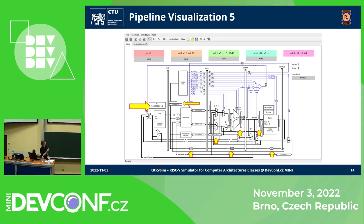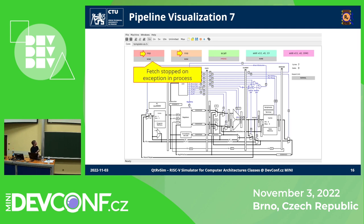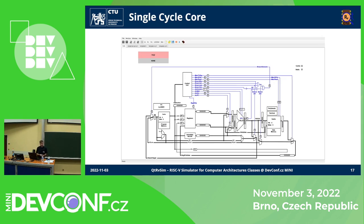Here we can see an interesting instruction coming in. E-call is the RISC-V term for system call. As it reaches the decode stage, it gets recognized. And to simplify it for students, we stop fetching more instructions before the E-call is processed. However, a full pipeline is not always what we want. We also teach simple concepts, and for that we have a simple single-cycle processor available.